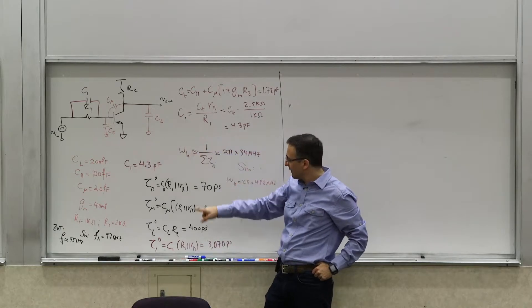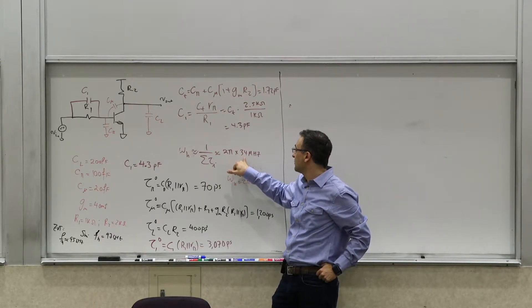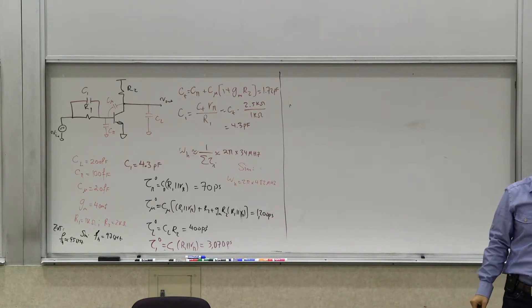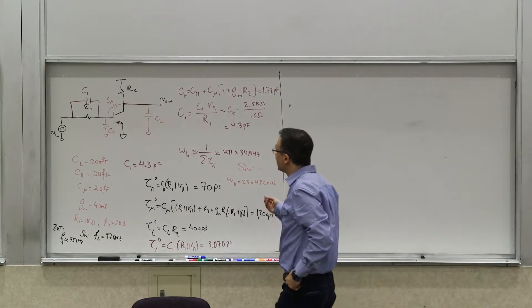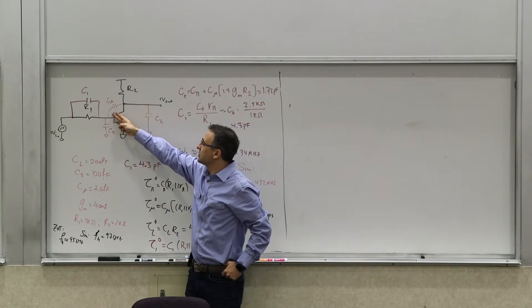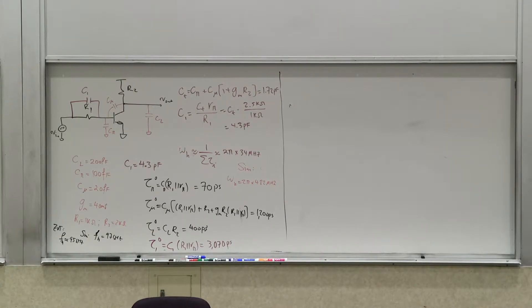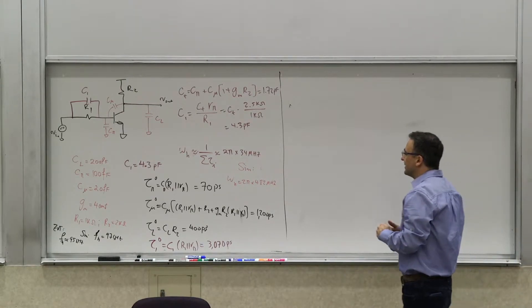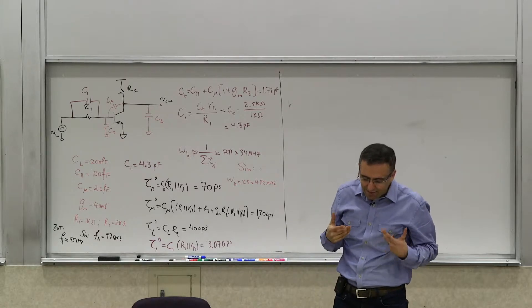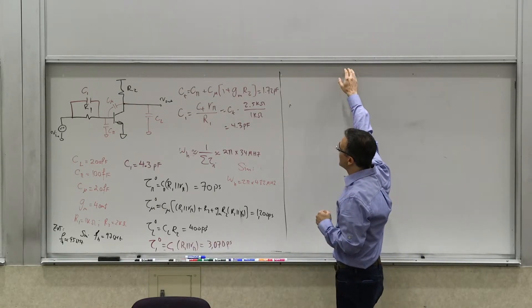Because this capacitor by itself introduced a large time constant and when we took that into the sum it estimated a bandwidth of 34 megahertz, but the actual simulation showed bandwidth more than an order of magnitude higher. This failure of the estimation is too drastic, so the question is can we modify the ZVT to improve it.